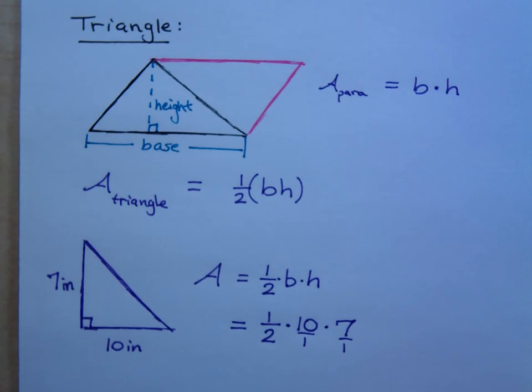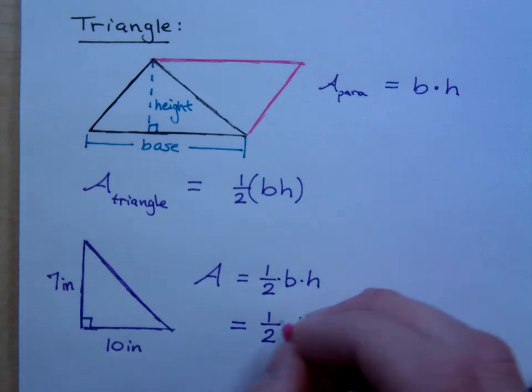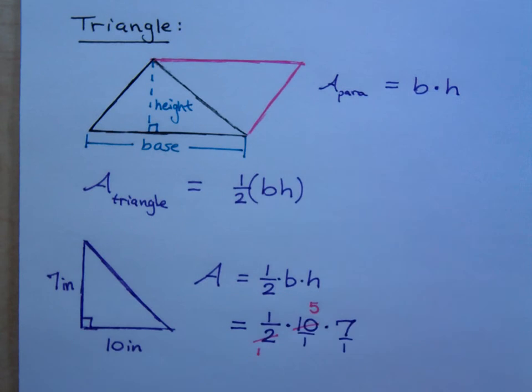And I'm going, this is all connected. Is there a way that I can reduce this so I don't have to get large numbers? How can I reduce this? Can the 2 go into anything in the numerator? 2 can go into 10, so 2 goes in here once. 2 goes into 10 five times.